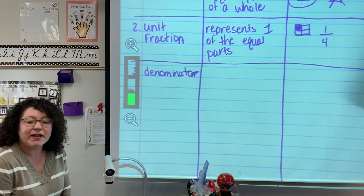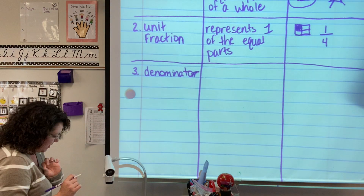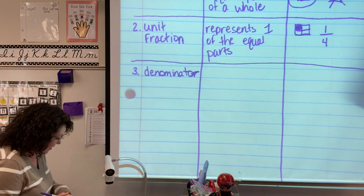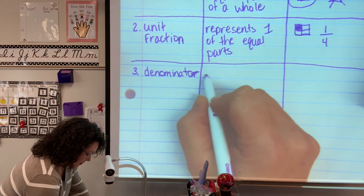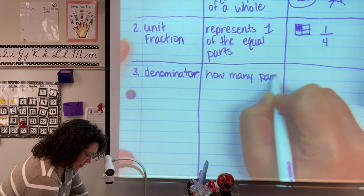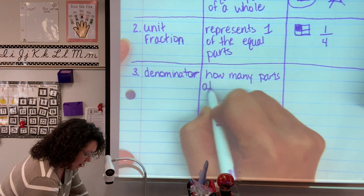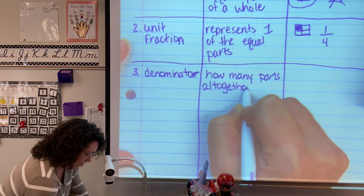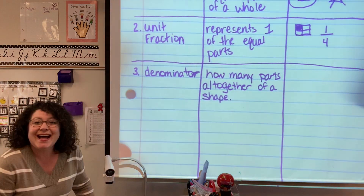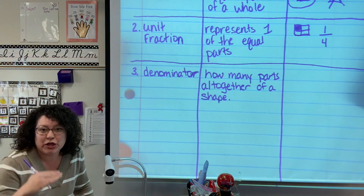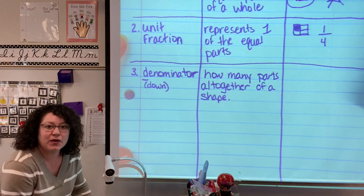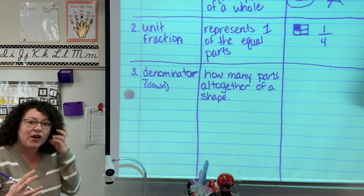It's a long word, and I said it yesterday just a little bit — you may remember what a denominator is. It is the number below; it's underneath the fraction line. How many parts all together of a shape. This is how I remember it: denominator down. It's underneath. So our denominator is how many pieces are all together.